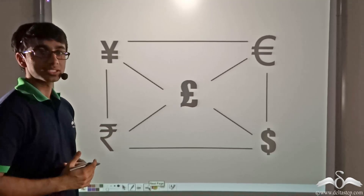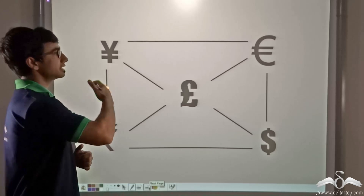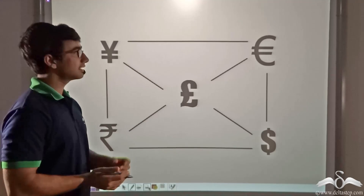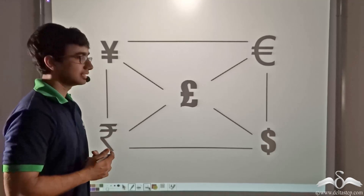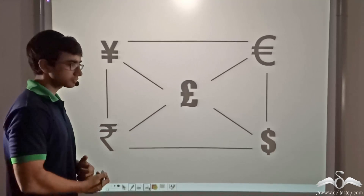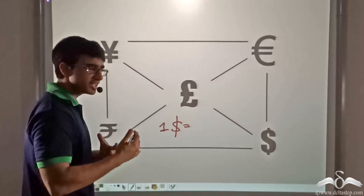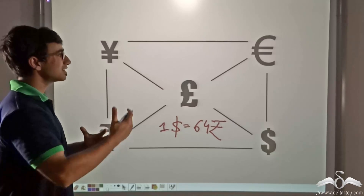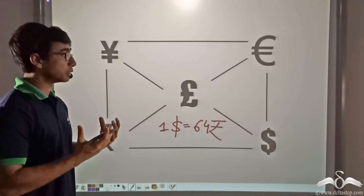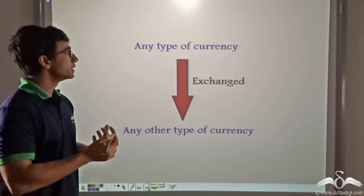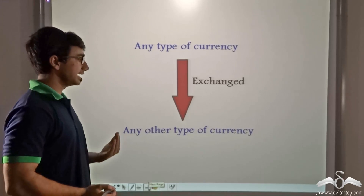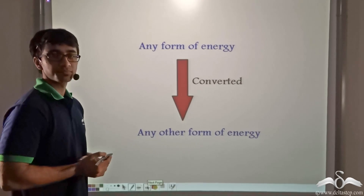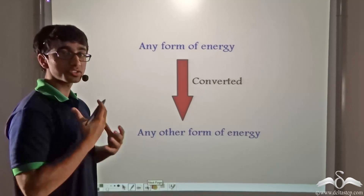Now let us talk about a very important concept as far as energy is concerned. Several different currency symbols are shown — the yen, euro, pound, rupee, and dollar. Just as these currencies can be converted from one form to another (for example, one dollar is roughly equal to 64 rupees), so can all forms of energy be converted into any other form of energy. All the forms of energy we talked about can be interconverted.